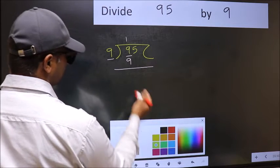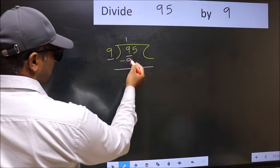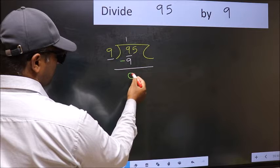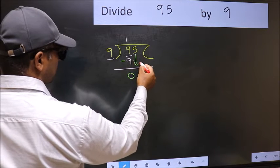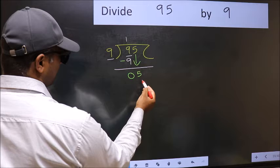Now you should subtract. 9 minus 9 is 0. After this, bring down the number beside. So, 5 down.